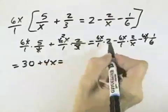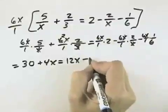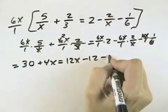Then we have a 6x times 2 is 12x. The x's cancel, leaving a minus 6 times 2 is minus 12. And finally the 6's cancel, leaving a minus x.